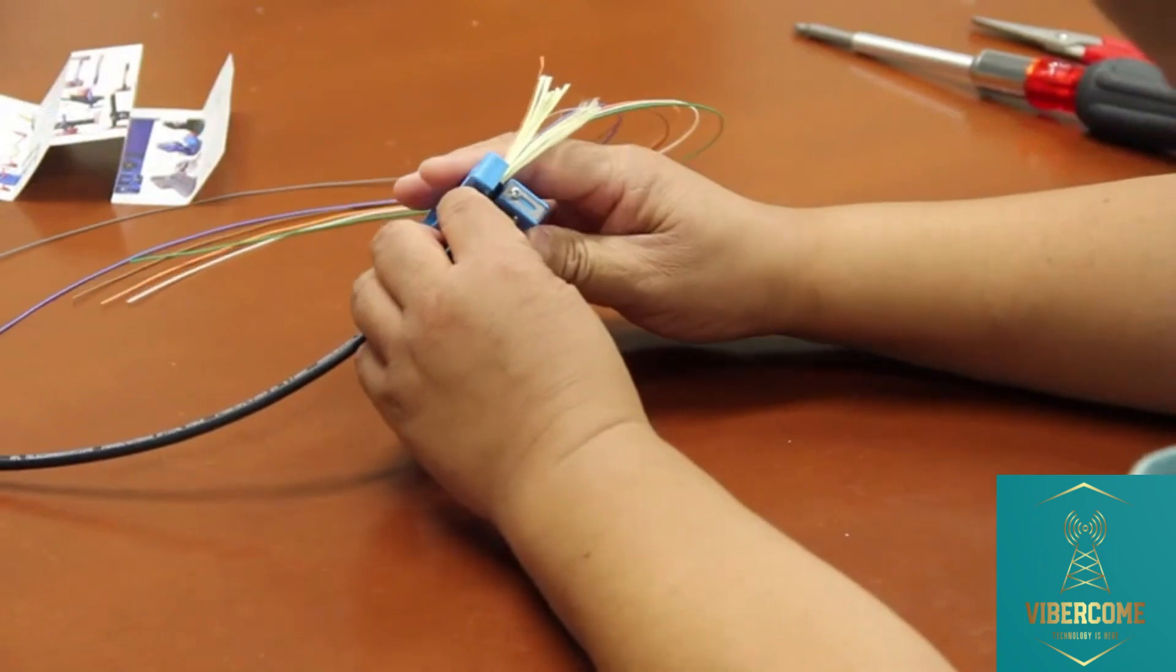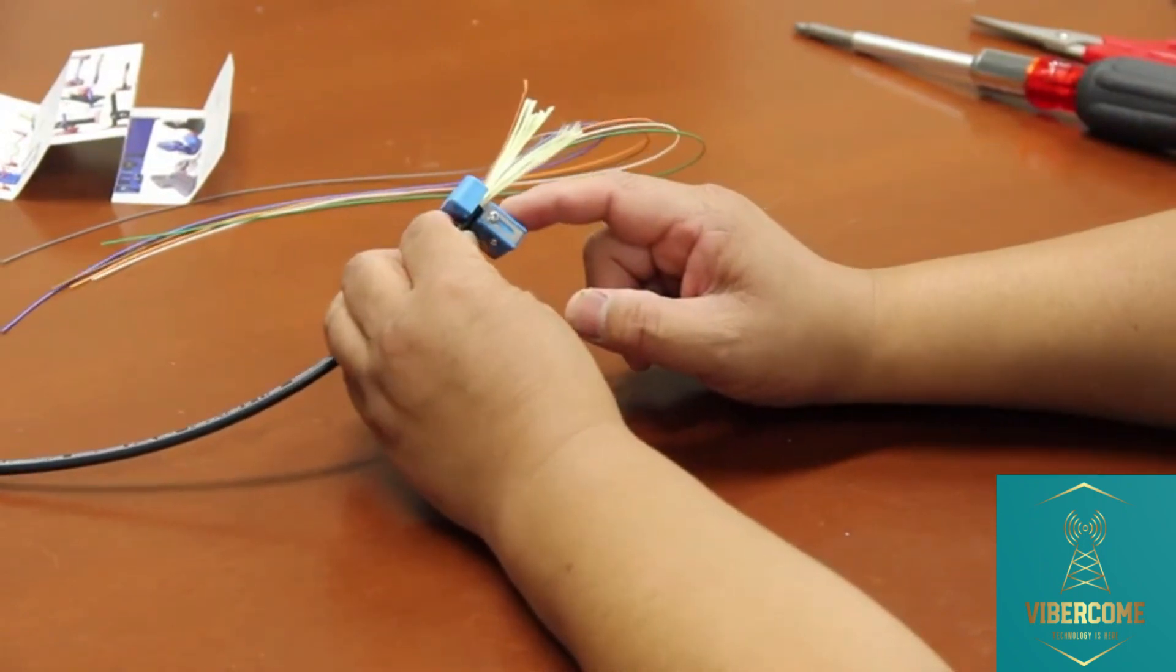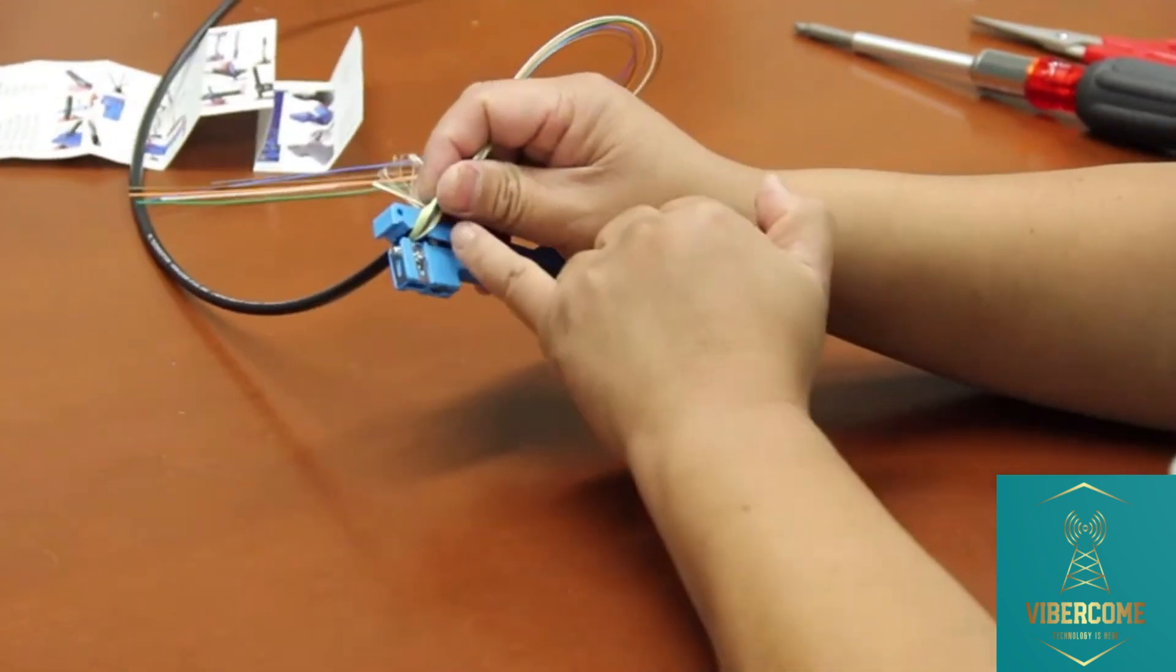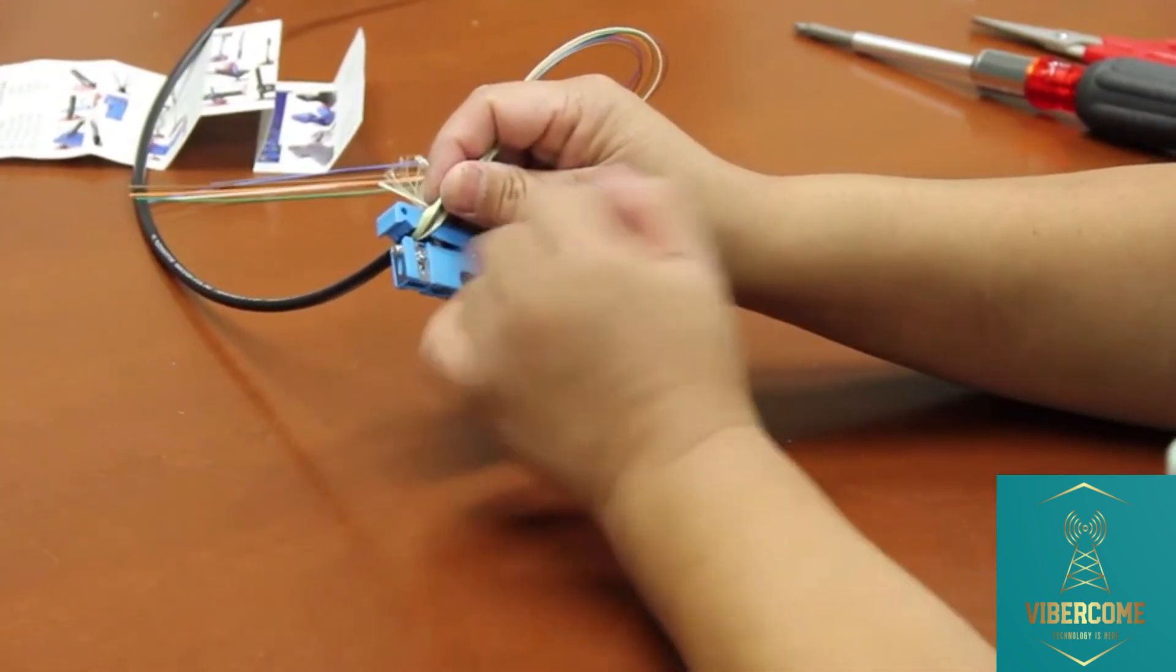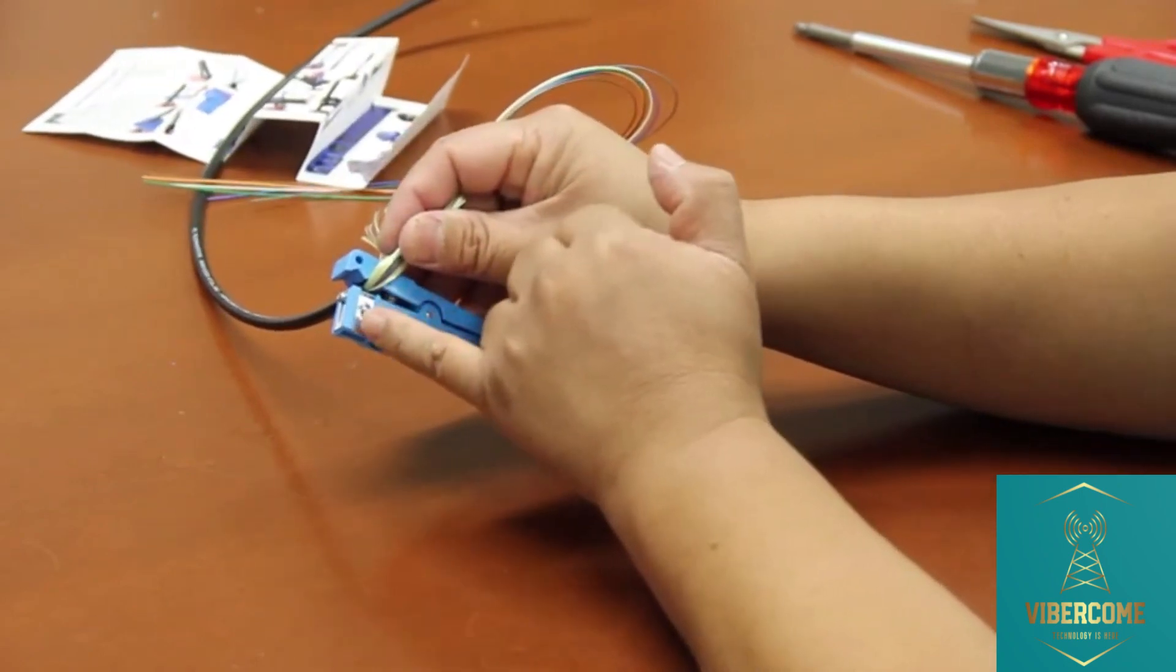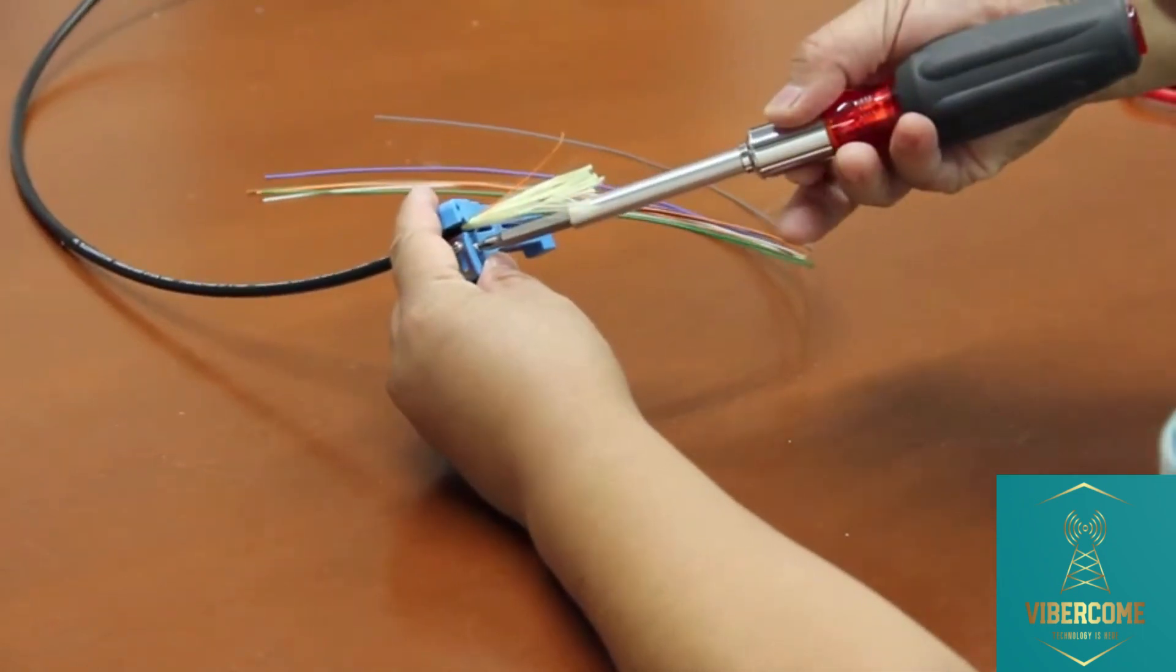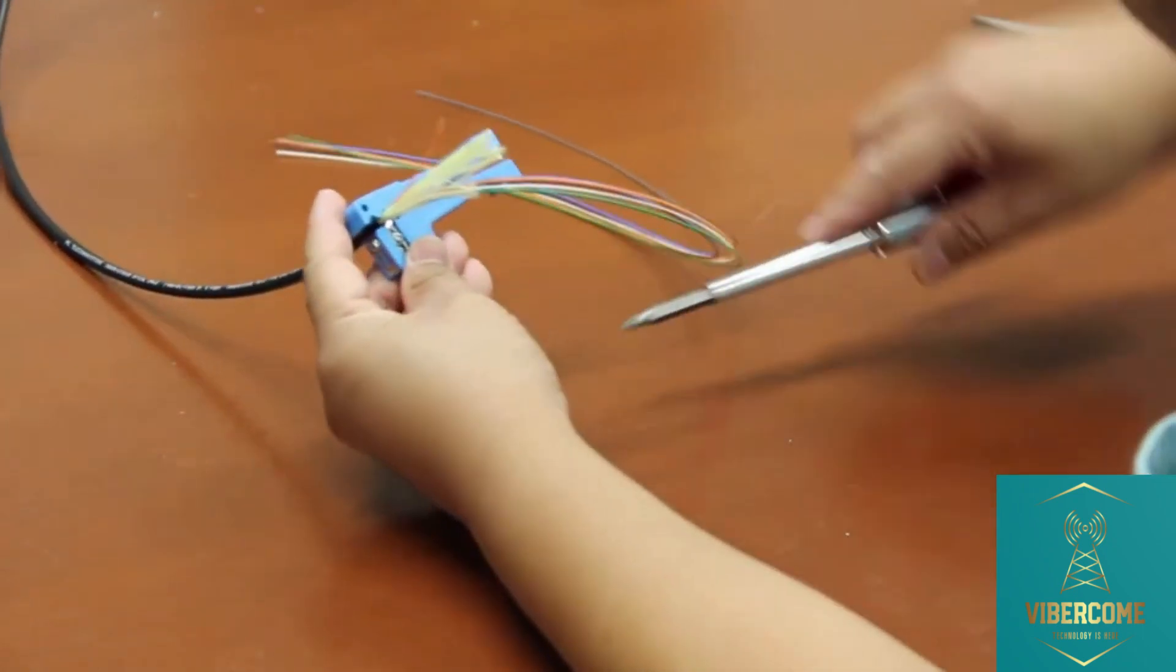The first step is to adjust the blade's cutting depth. We put the buffer tube within the second notch up against the buffer tube, such that we can see where the blade depth should be set. Now let's loosen the screw and move the blade to the correct depth, where it cuts through the buffer tube but does not damage the fibers inside.